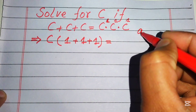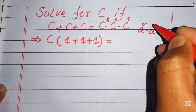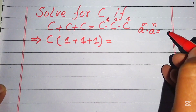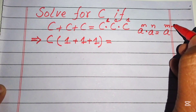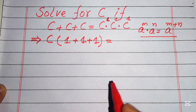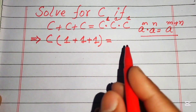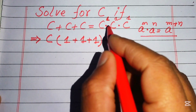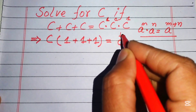We apply the exponential law: a to the power of m times a to the power of n equals a to the power of m plus n. We use this law on the right-hand side to add the exponents of all terms.